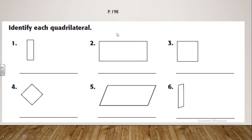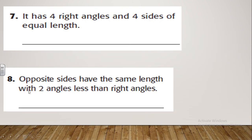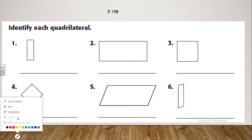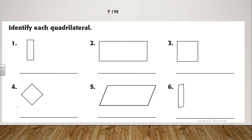Now I want you to open your booklet to page 198. Here you need to identify each parallelogram. The first shape — can you tell me what this shape is called? It's a rectangle. What about the second one?